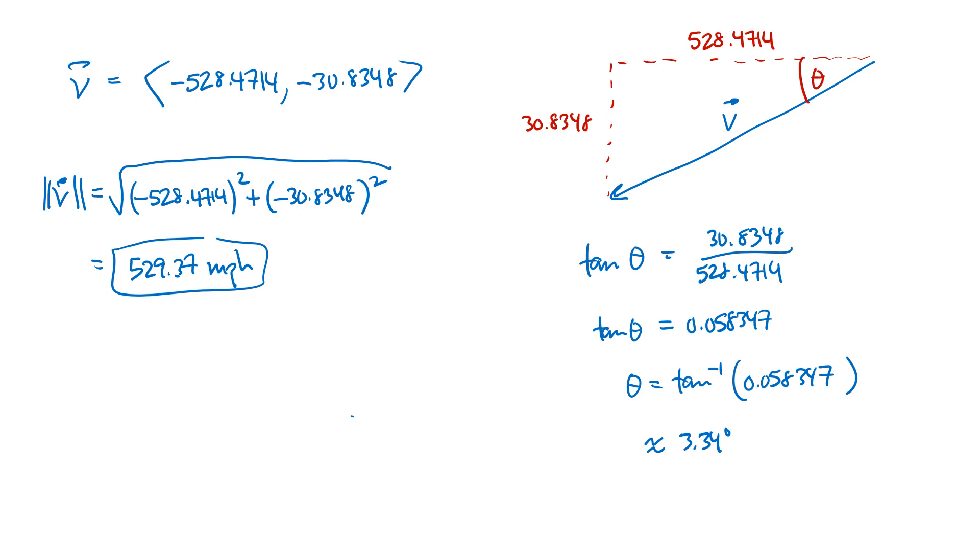And again, if we think of our compass directions here as north, south, east, and west, that angle is south of west. And so that is going to be 3.34 degrees south of west. So that's our bearing.